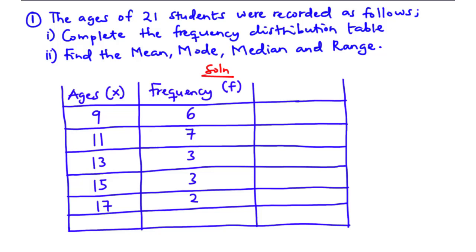In today's video, we are going to talk about frequency distribution of ungrouped data. We are going to learn how to find the mean, the mode, median and range using frequency distribution. Frequency distribution is a table that presents the number of times that each value in a dataset occurs. In this video, we are going to focus more on data that has not been classified or sorted into categories.